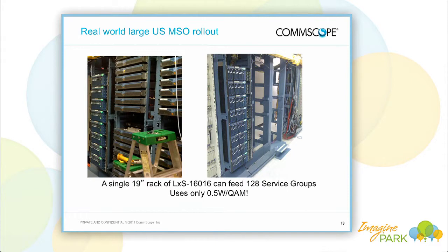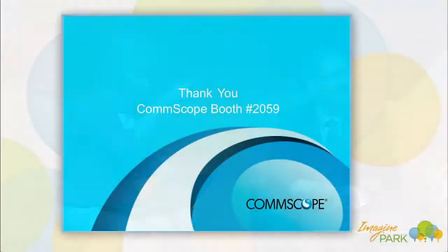A last picture gives you a sense of density and scale. Essentially what we've got is a 7-foot rack with 8 of those products racked out. That's 128 service groups, each one being 160 QAMs — so that's about 20,000 QAMs — and that would take half a watt per QAM. We've got a booth very close by, booth number 2059, with the product racked up and working. We'd love to answer any questions. And yes, we're selling it — it's not in development, it's in our customers' networks.